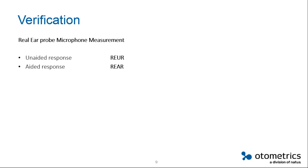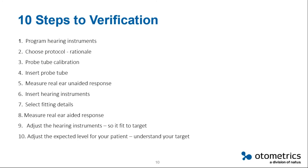Additional time is required for the fitting process, but I think we actually save time when doing verification. In a very simplified way, we need to measure the non-aided response and the aided response — that's what we have to do. We need to understand that all our customers don't have the same needs, so meeting the target means meeting the target for this patient. If we look at the 10 steps, the first is to program the hearing aid, which we have to do whether we are using verification or not.